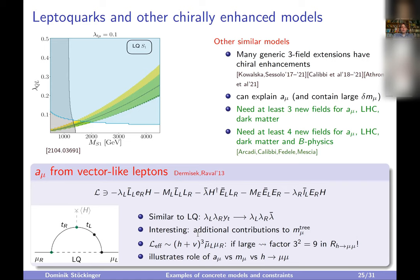There are many generic three-field extensions with such chiral enhancements: vector-like leptons, leptoquarks, supersymmetry all behave like this, and many no-name models as well. Interesting statements from the literature: if you restrict to renormalizable models with spin-0 and spin-1/2 fields, you need at least three new fields to explain g minus two and dark matter simultaneously while evading LHC limits, and at least four new fields if you also want to explain b physics. These are quite complicated setups.